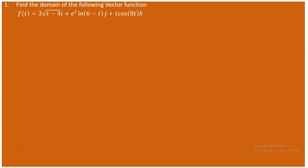To find the domain of this vector value function, we need to find the domain of its component functions. We have three components: 3√(t-4), e^t · ln(6-t), and t·cos(8t). We then take the intersection of these domains, and that intersection will be the domain of the vector function.